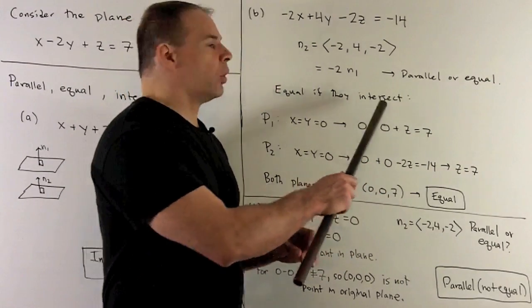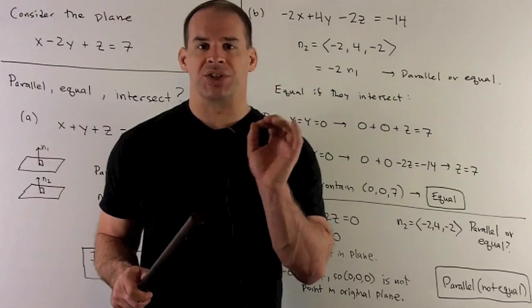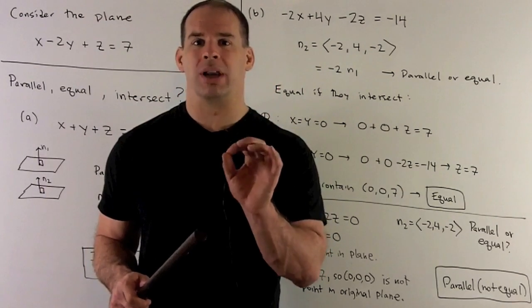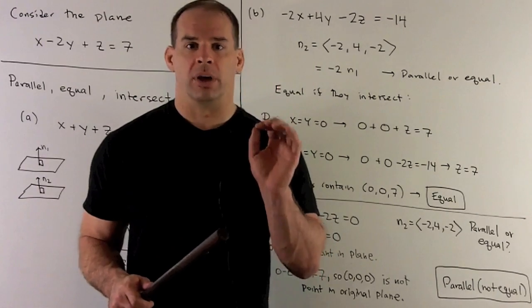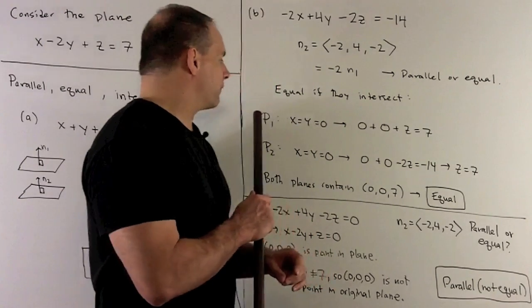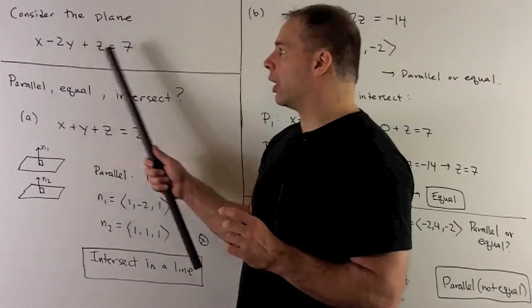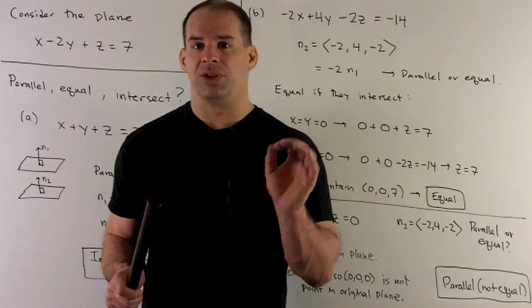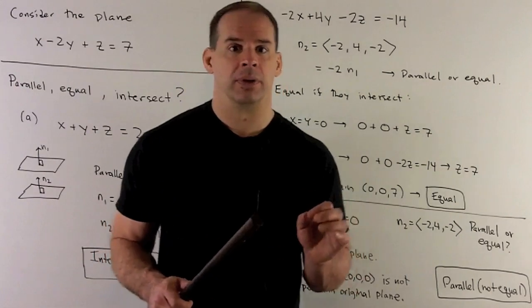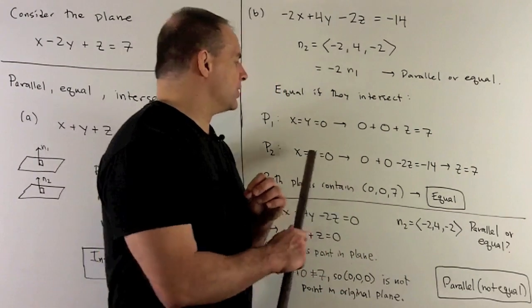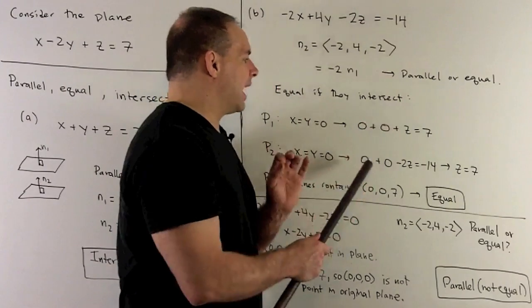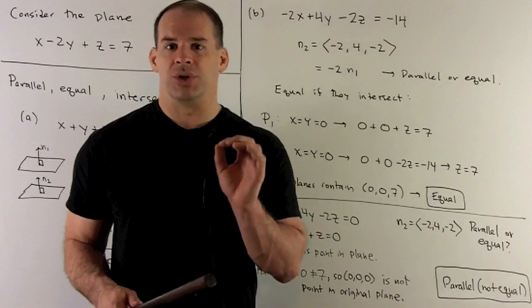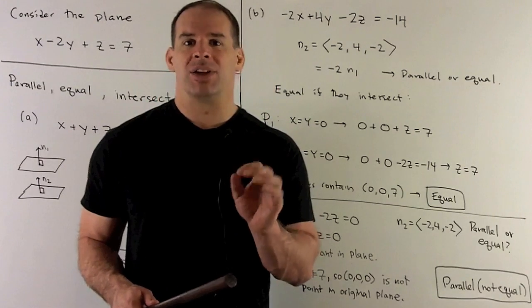Now, if they're equal, all we have to do is check and see if they intersect in a single point. If we have parallel planes that intersect in a single point, then they have to be equal. So for our first plane, we'll set x and y equal to 0, which gives me z equals 7. So that means the first plane contains the point 0, 0, 7. Then we'll let x and y be equal to 0 in our second plane. Again, we're going to get z equals 7. So both planes contain the point 0, 0, 7. So that means they're equal.